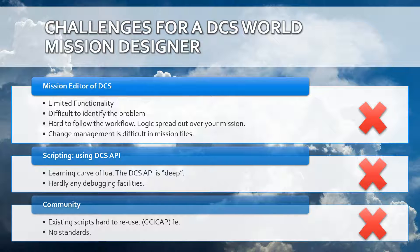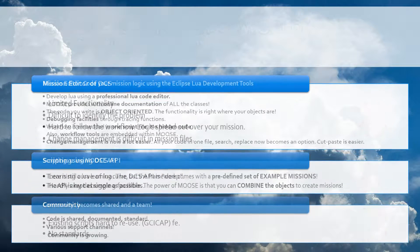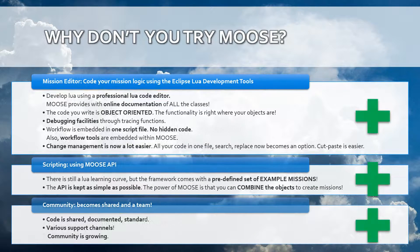Grimes has done efforts to collect those scripts into a central repository, which is a noble effort, but I think there's something more that we could do. For this reason I started developing a couple of years ago the Mission Object Oriented Scripting Environment. With the Moose framework I suggest you use the Eclipse LDT, which is a standard freeware professional Lua code editor that you can download and install. Moose is written in that professional Lua code editor. Moose is a framework.